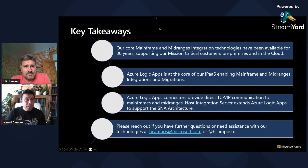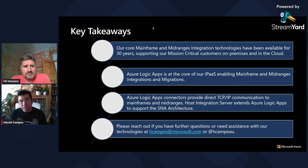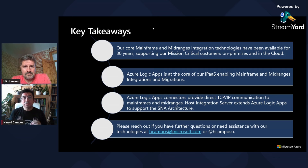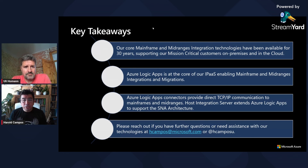This is the end of the presentation. I want to quickly cover the key takeaways. Our core mainframe and mid-range integration technologies have been available for 30 years, supporting our mission-critical customers on-premises and in the cloud. Azure Logic Apps is at the core of our iPaaS, enabling mainframe and mid-range integrations and migrations. Azure Logic Apps connectors provide direct TCP/IP communications to mainframes and mid-ranges. Host Integration Server extends Azure Logic Apps to support the SNA architecture. Please reach out if you have further questions at hcampus.microsoft.com or on Twitter, YouTube, or LinkedIn at hcampus.